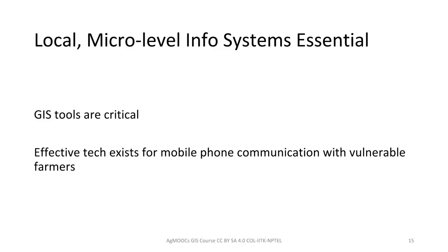To conclude, local micro-level information systems are essential for planning adaptation to drought, which is going to increase in frequency in many parts of the world. GIS tools are critical, and effective technology is available for communicating those results to the farmers who need them most. This combination of GIS tools and mobile technology is going to be fundamentally important in the years to come in most regions of the world where drought is going to increase, both in intensity and in frequency.